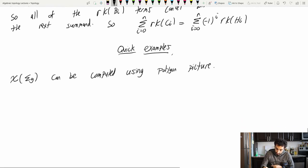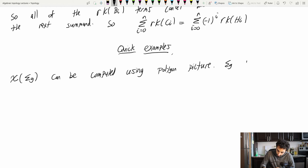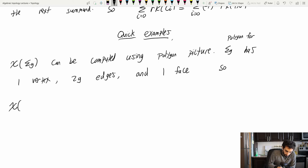So I'm not going to draw it here because we've seen it a few times, but sigma g has one vertex, 2g edges and one two cell, one face. So the Euler characteristic of the orientable genus g surface is one minus 2g plus one, that is 2 minus 2g. That's a formula you should keep near and dear to your heart because it's very useful.